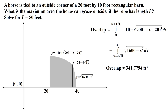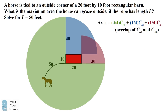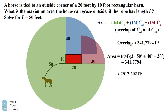So we figured out the hard part of this problem. We can now go back to our original diagram and calculate the area that the horse can graze as the area of the three-quarter circle and quarter circles, minus the area of the overlapping region. Substituting in our values, we end up with the answer that the area the horse can graze is approximately 7512.202 square feet.